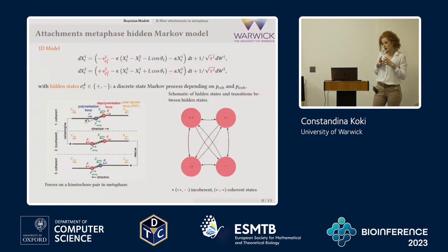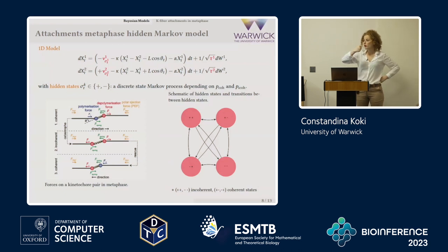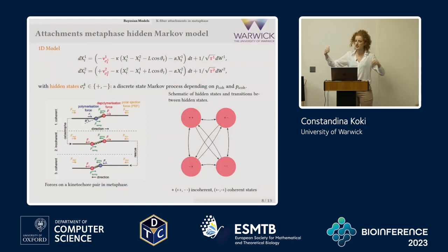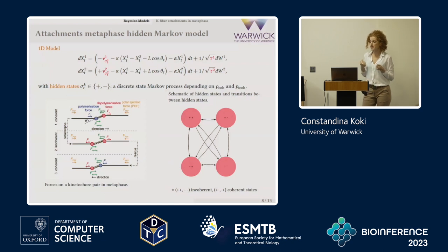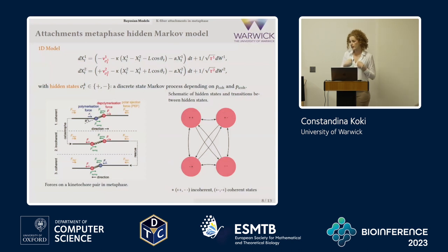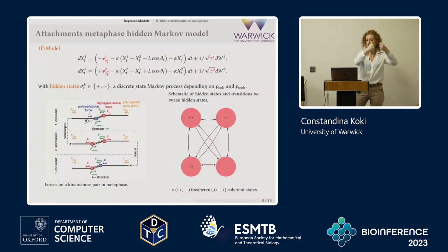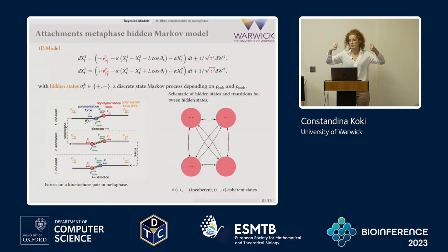The hidden states have a biophysical interpretation. If a sister is moving away from the pole, that is a plus state; if moving towards the pole, that is a minus state. Combining these for both sisters gives a hidden Markov model with four hidden states: minus-plus, plus-minus, minus-minus (both moving towards each other), and plus-plus (both pushing away). This fully describes the oscillatory motion.